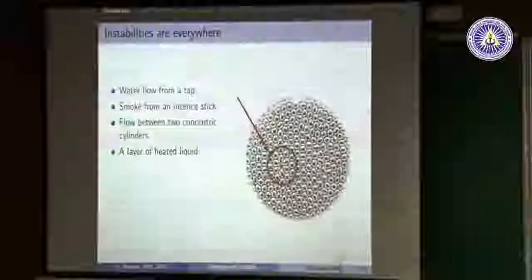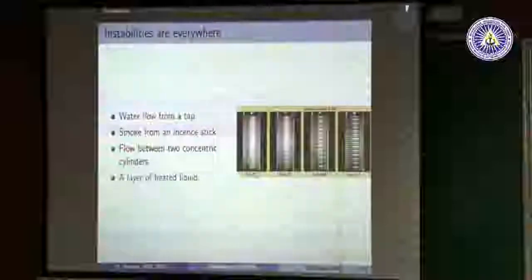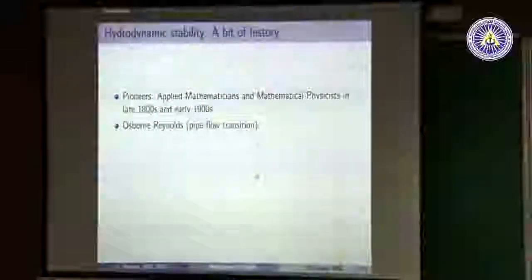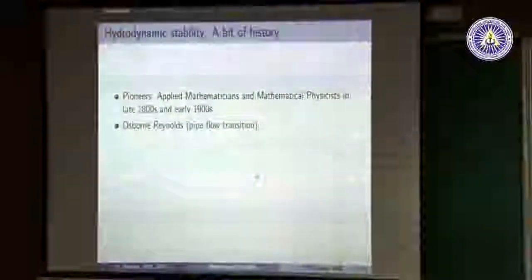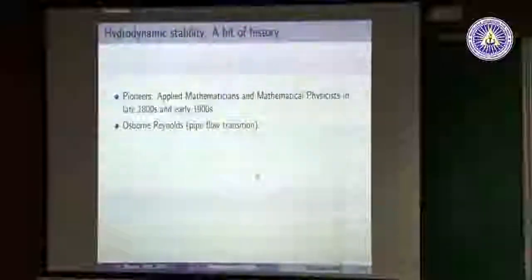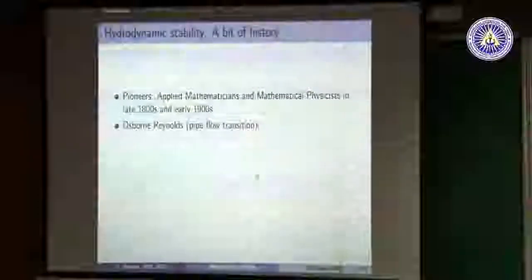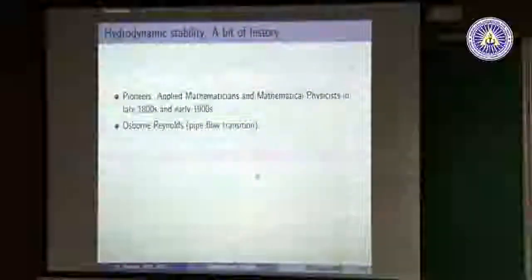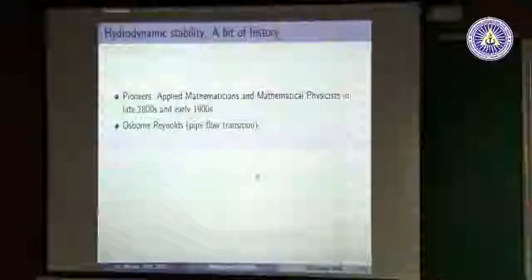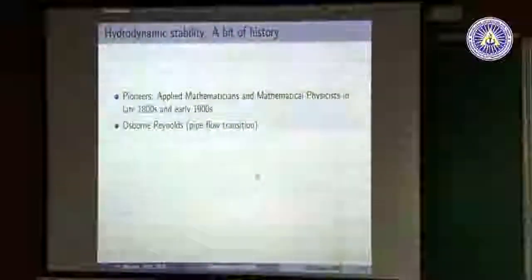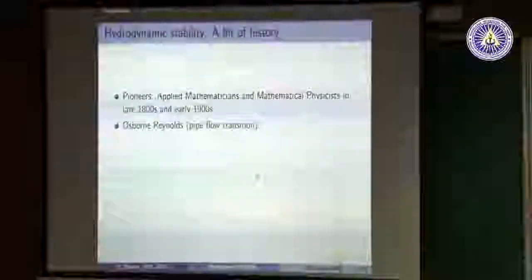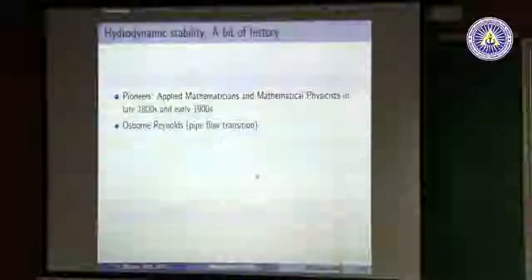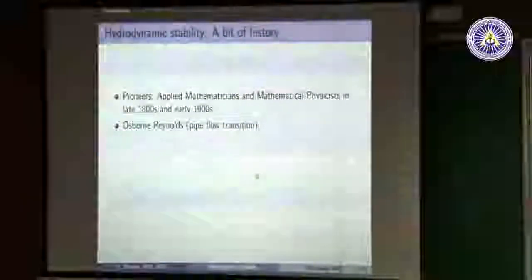A bit of history: after Navier and Stokes found the Navier-Stokes equations, there were many studies on flow rate in pipes by Hagen and Poiseuille. One of the first important studies in hydrodynamic stability history is the work by Osborne Reynolds — the famous laminar-turbulent transition in pipe flow, done in the mid-1880s. The pioneers were applied mathematicians and mathematical physicists in England and Europe in the late 1800s and early 1900s, the first experiment being Reynolds's.